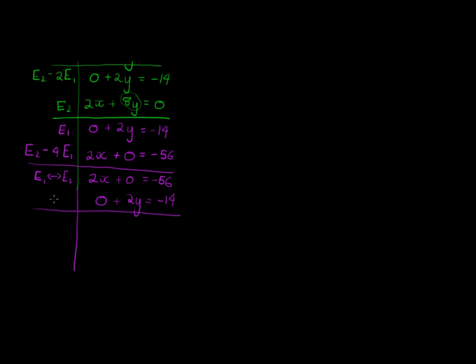And finally, I want x and y on their own. So I'm going to multiply equation 1 with a half, which means I have x plus 0 is equal to negative 28. And equation 2 with a half gives me 0 plus y is equal to negative 7. And there you go. This solution set will be when x is negative 28 and y is negative 7.